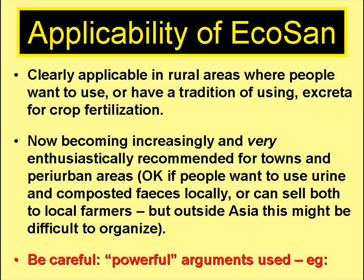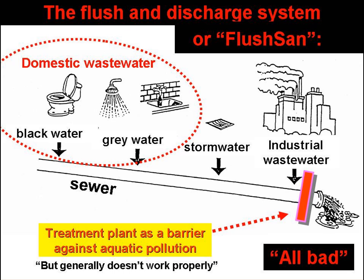Of course, if they do, then fine, but you really need to find out first. Quite powerful arguments are used against sewerage of any type, and thus for Ecosan. For example, the flush and discharge system, or flush SAN, is often portrayed like this: all the separate waste streams — the yellow, brown, and grey waters — are mixed together and discharged into a sewer. The sewer also receives untreated stormwater, and often untreated industrial wastewaters as well. The treatment plant, if of course there is one, generally doesn't do a good job, so the receiving water becomes badly polluted. So it's all bad.